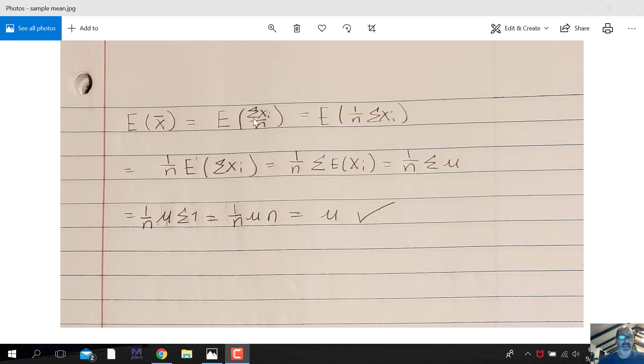So we can rewrite the sample mean as a summation of the variables. I suppress the i equals 1 to n, so we're doing this for each individual i up to the n, which is the sample size. This is your basic equation for the mean, the sample mean.